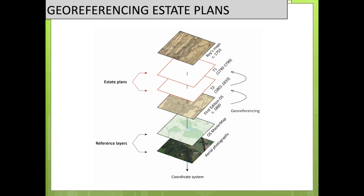In my PhD, I integrated the estate maps as additional layers. I divided them into two time series: the first for maps from 1740–1799, and the second for estate maps from 1801–1833, directly comparable with the first edition OS. The reason I separated 18th and 19th century is because most 18th century maps were before enclosure and agricultural improvement, while most early 19th century maps were after this improvement, making them directly comparable.